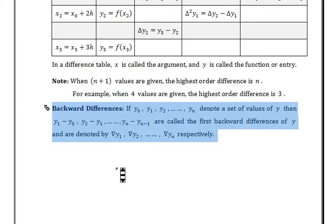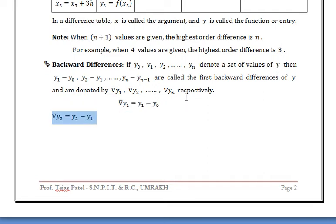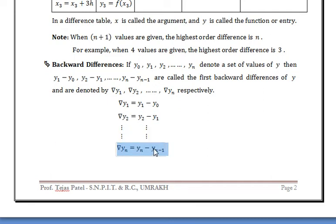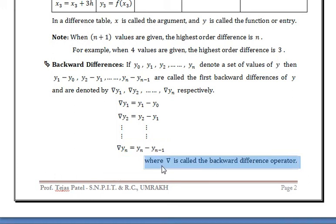Now for backward differences: if y0, y1, y2, up to yn denote a set of values of y, then y1 - y0, y2 - y1, up to yn - yn-1 are called the first backward differences of y, and are denoted by ∇y1, ∇y2, up to ∇yn respectively. Here ∇ is called the backward difference operator.